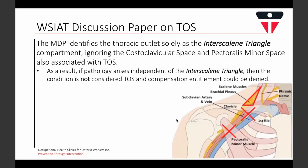The medical discussion paper identifies the thoracic outlet solely as the interscalene triangle compartment, omitting the costoclavicular space and the pectoralis minor space. All three compartments are now widely recognized as part of the thoracic outlet. This is significant because if pathology arises independent of the interscalene triangle, which it often can, then according to the WSIAT document the condition would not be considered TOS and therefore should not be pursued for entitlement.